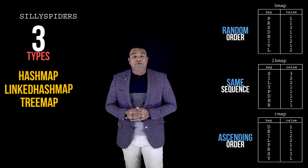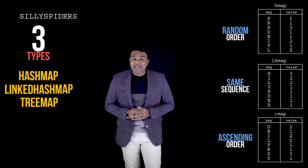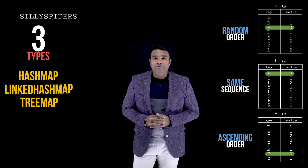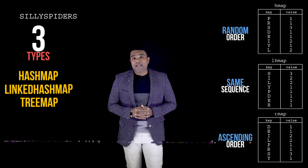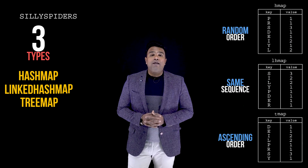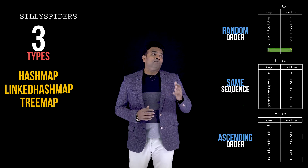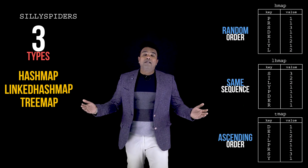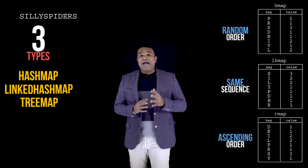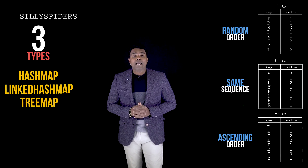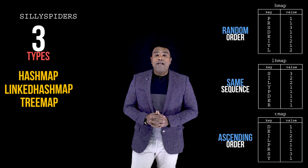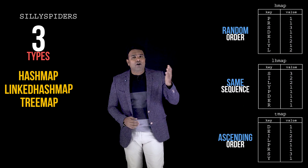If you notice the maps carefully, the HashMap suggests that S has occurred thrice — the same is suggested by the LinkedHashMap and the TreeMap. Similarly, I has occurred twice and L has occurred twice, as indicated by all three maps. All the remaining characters have occurred only once. This shows that all three maps highlight S, I, and L as the duplicate characters, and as a programmer I have the liberty to use any of the three maps.